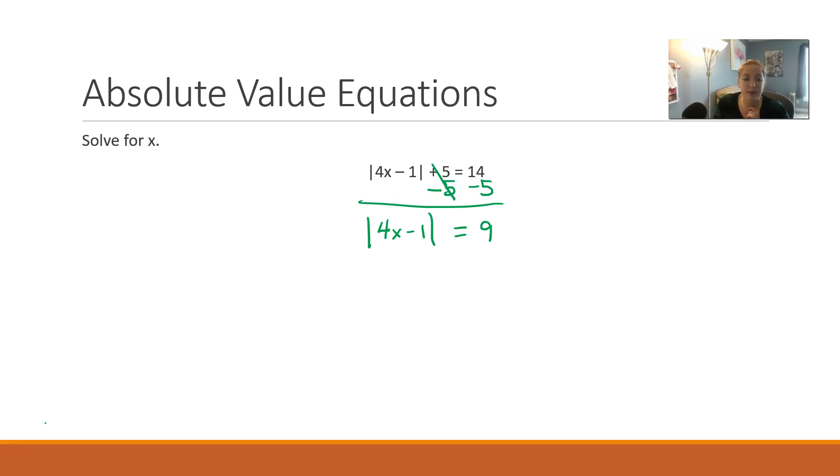Now that we have the absolute value by itself on the left-hand side, we're going to take what's inside, break it out of jail. We set it equal to the positive value outside the absolute value, so positive 9 and negative 9. Then we just go ahead and solve like we normally would.